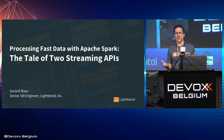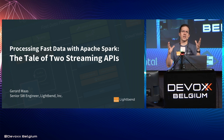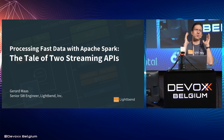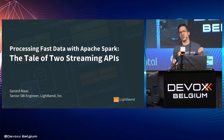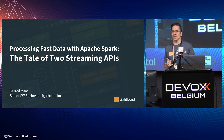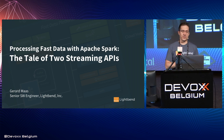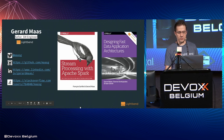It might be confusing that there are two APIs for a single stream processing framework. What I want is that when you walk out this door, you will have a good idea of when to use one, when to use the other, what are the capabilities of each one of them, and hopefully get you inspired to start your first project with the stream APIs of Apache Spark.